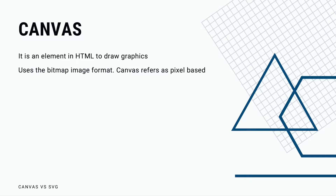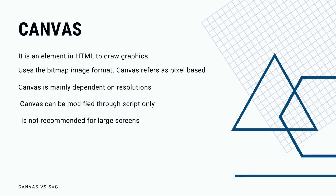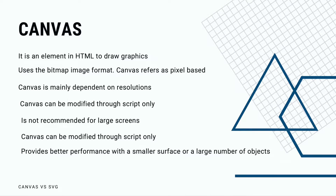Canvas uses the bitmap image format. Its syntax is very simple, but as it is a bunch of pixels it cannot be read by search engines, for example. Canvas is very interactive but resolution dependent — if the image is enlarged or displayed on retina screens, it may start reflecting the pixels of the image.